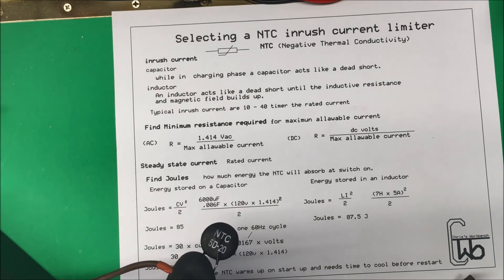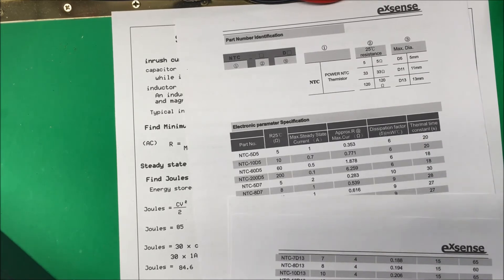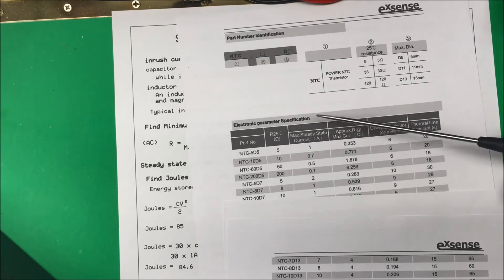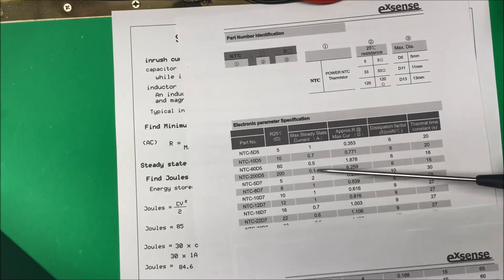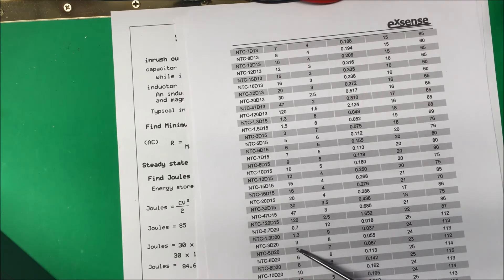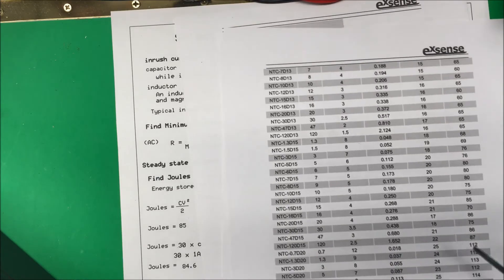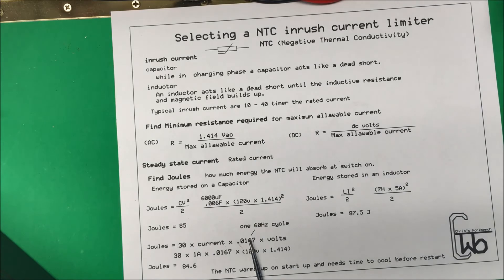The unit I'm using happens to be a 5D20. On the manufacturer's website the datasheet shows ohms at 25°C and steady-state current — those are the two key specs. Going down to 5 ohms at 7 amps: at 25°C it has 5 ohms, but as it heats up the resistance drops to 0.087 ohms so it won't affect the heater during normal operation, and it can handle 7 amps. That's the 5D20 — that's what we'll use in the circuit.